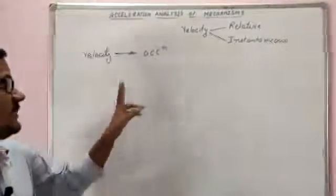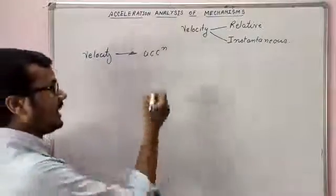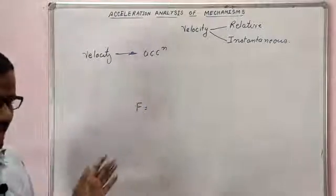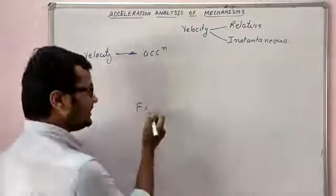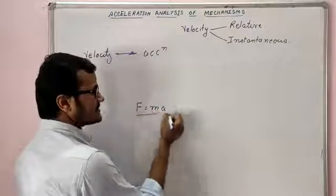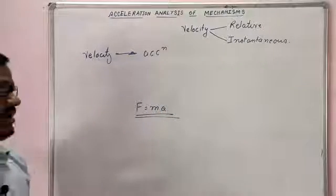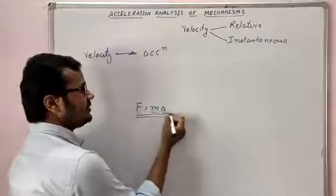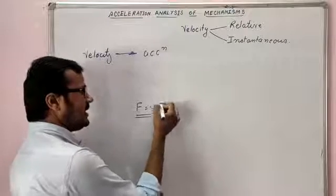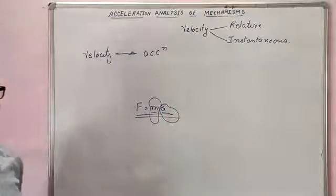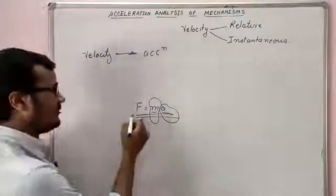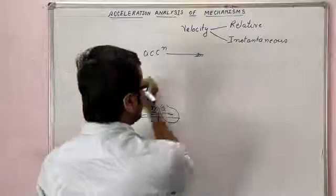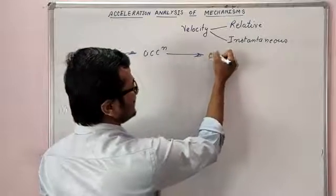But if the velocity varies, that means acceleration will exist. We know that in a mechanism, on each and every link some external force might be acting, and that external force is nothing but mass into acceleration — Newton's second law. Once we have analyzed acceleration and know the mass of the product, we can find out the force.